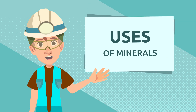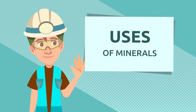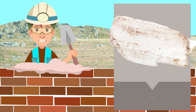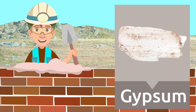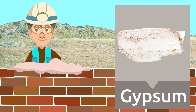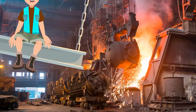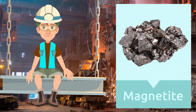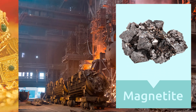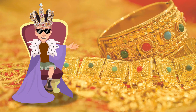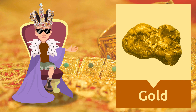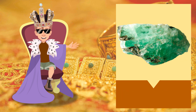Did you know that we use minerals for many things? Let's look at some examples. Gypsum is a mineral used in construction — it helps to smooth out the surface of walls before painting them. To make metals like iron, we use a mineral called magnetite. To make jewelry, we use minerals like diamonds, gold, or emeralds.